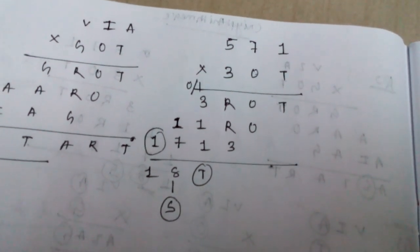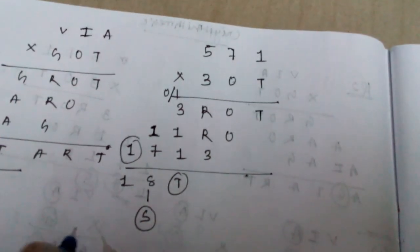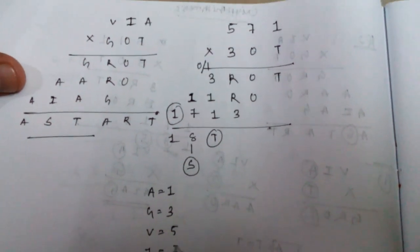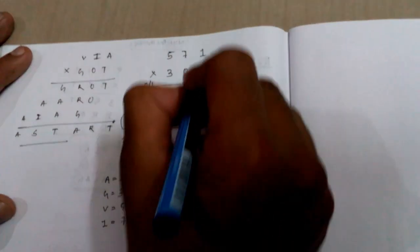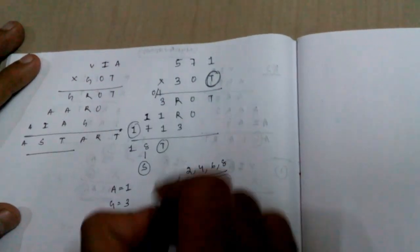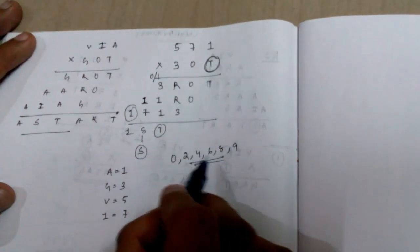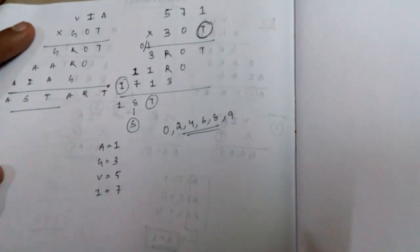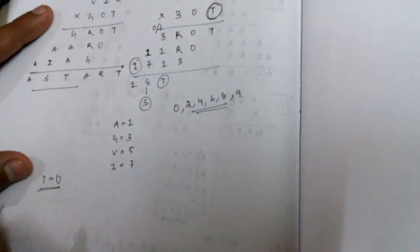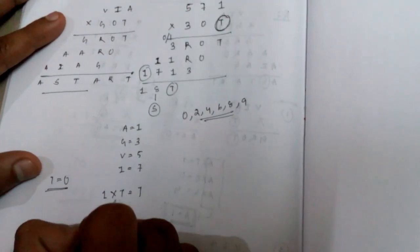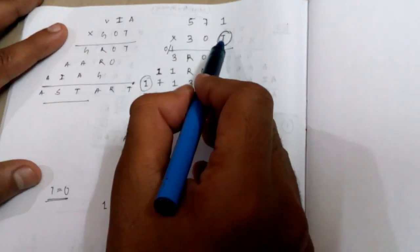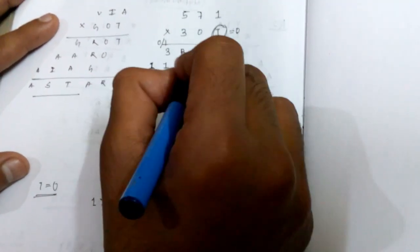We already have A equals 1, G equals 3, V equals 5, I equals 7. Now we use trial and error for T. The remaining possible values are 0, 2, 4, 6, 8, 9. For T equals 0: zero into one is zero, zero into seven is zero, zero into five is zero — this gives all zeros, which is not possible.